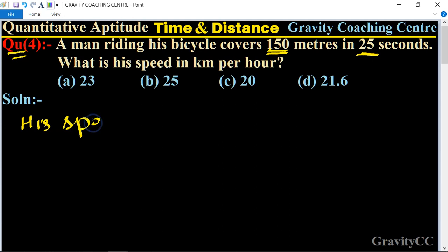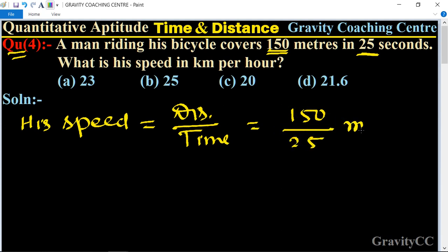So what is his speed? His speed is equal to distance upon time, and here distance is given as 150 and time is 25 seconds, so meter per second. It needs to be changed into kilometer per hour.